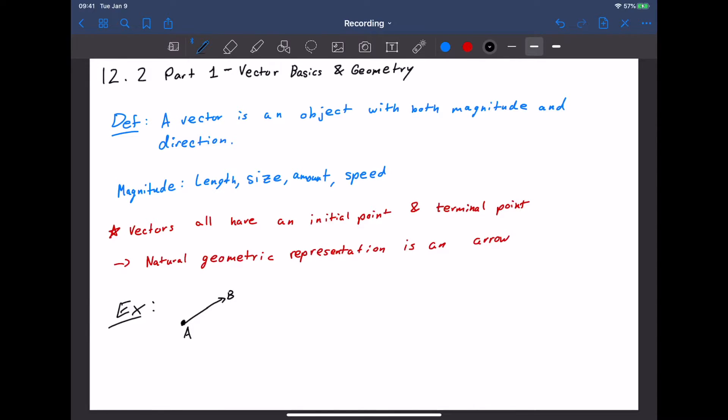One thing to point out, this is not a ray. We are not saying this goes on indefinitely. This is a vector that's stopping at B. B is the terminal point, and A would be the initial point.